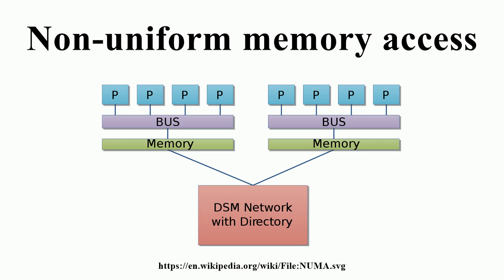Cache Coherent NUMA: Nearly all CPU architectures use a small amount of very fast non-shared memory known as cache to exploit locality of reference in memory accesses. With NUMA, maintaining cache coherence across shared memory has a significant overhead. Although simpler to design and build, non-cache coherent NUMA systems become prohibitively complex to program in the standard von Neumann architecture programming model. Typically, CC-NUMA uses inter-processor communication between cache controllers to keep a consistent memory image when more than one cache stores the same memory location.